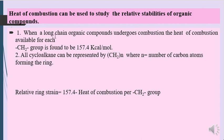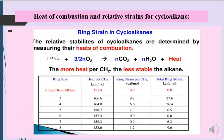When long-chain organic compounds undergo combustion, the heat of combustion available for each CH₂ group is found to be 157.4 kcal/mol. All cycloalkanes can be represented by (CH₂)ₙ where n is the number of carbon atoms forming the ring. The relative ring strain per CH₂ group is calculated as: Relative ring strain = 157.4 − (heat of combustion per CH₂ group).